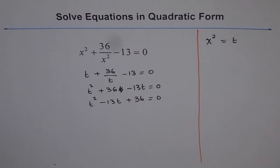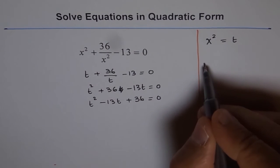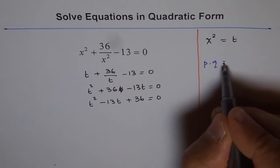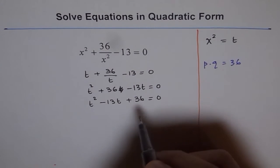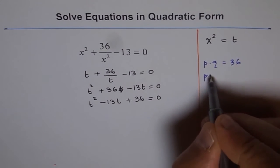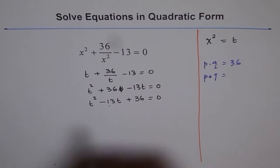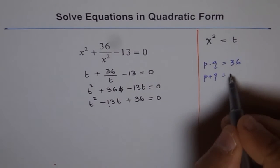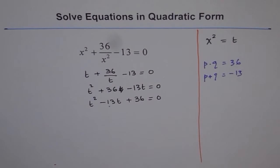Now, to factor this, what we can do? We can find two numbers whose product is 36 and whose sum is the coefficient of t, which is minus 13. Okay? So, what could be those two numbers?